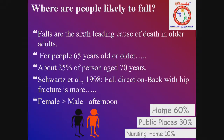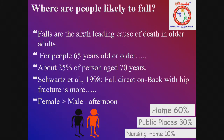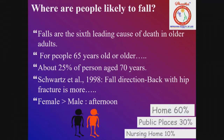Falls are the sixth leading cause of death in older adults. For people 65 years or older, about 25% of persons aged more than 70 years are affected by falls. Squares et al. in 1998 noted that fall directions are mostly from the back side with a hip fracture. Hip fracture is the leading fall risk, with females more affected than males. In Indian scenarios, many patients fall in early morning — getting up from bed to go to the toilet — resulting in hip fractures or strokes.